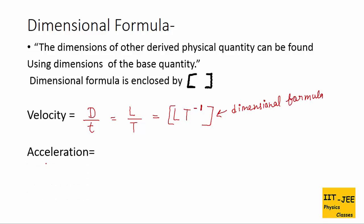Let's find the dimension of acceleration. We use the formula V over T — it is best to use the simplest formula. For V, L T⁻¹ is the dimension of velocity, and this is divided by time, capital T. When this T goes on top, we get an additional minus 1, so T becomes T⁻². The dimension of acceleration is L T⁻².